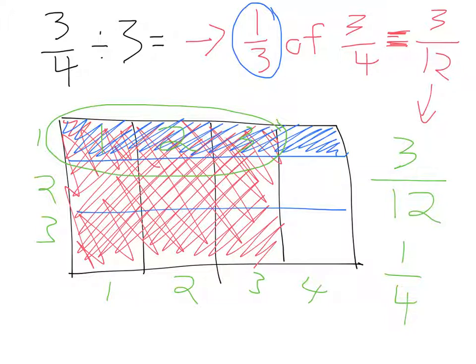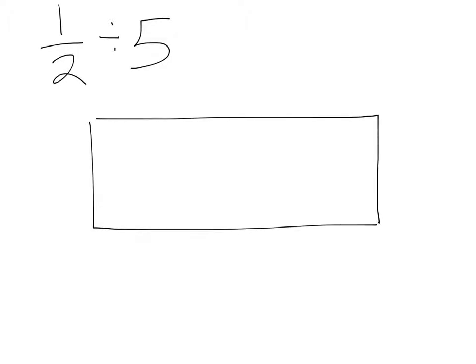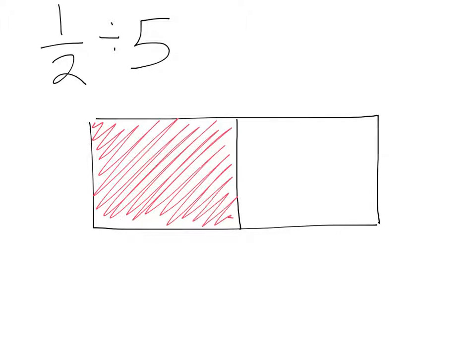Let's do another example. So let's say we have 1 half divided by 5. Divided by 5. So I'm going to start with my 1 half. So here I have my half, starting off with my simple fraction model, and then I need to divide that by 5.